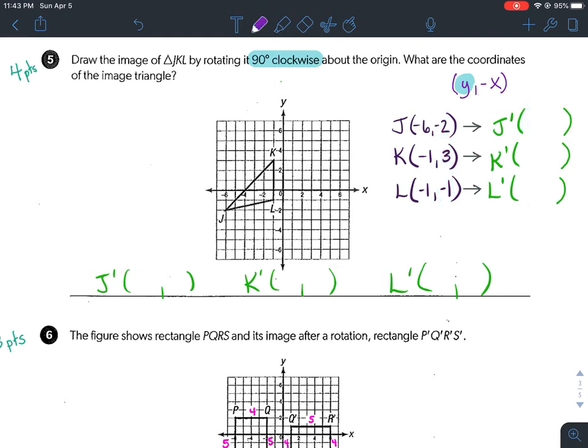For instance, for J prime, my Y coordinate for J is -2, so it now becomes my X coordinate. And then for the second part of this, you're going to take the opposite of the X coordinates.